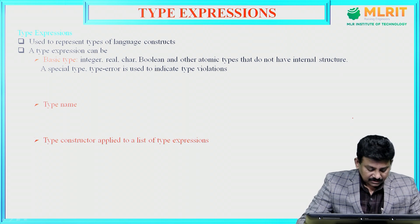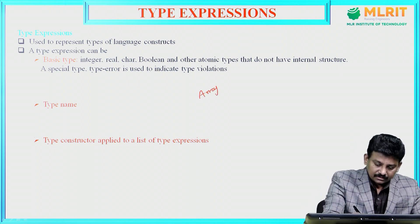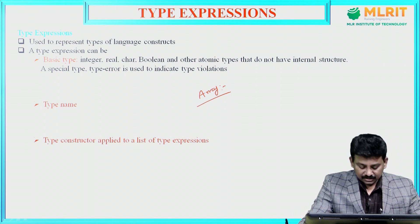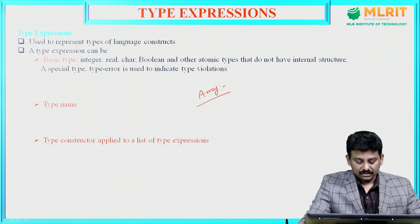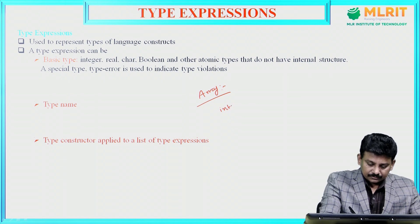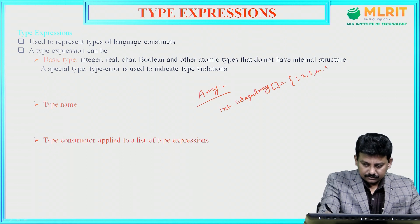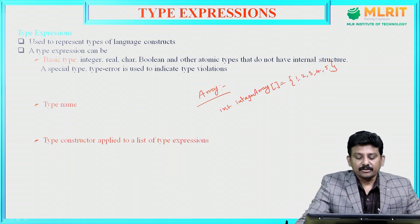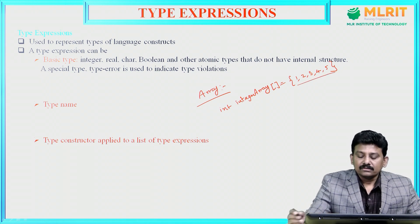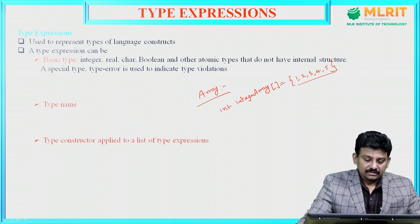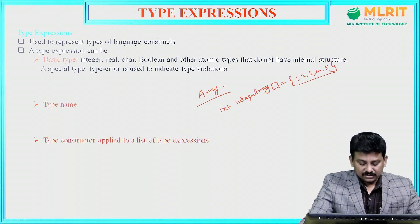Another type constructor is array. Array is also a type constructor — for example, used to create an array of a specific type. An integer array contains elements such as one, two, three, four, five. Array is a type constructor to create an array of five integers.